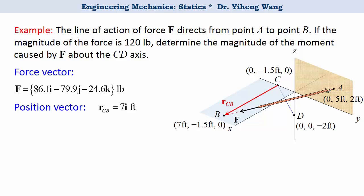Now we need to specify the direction of the axis C D. In other words, we need to find the unit vector U C D from the position vector R C D.